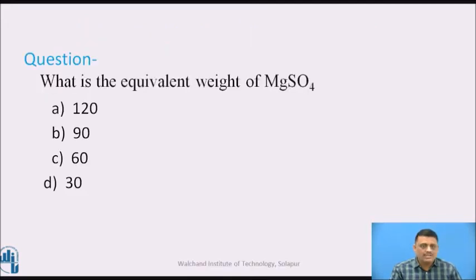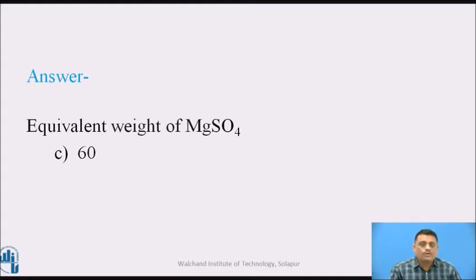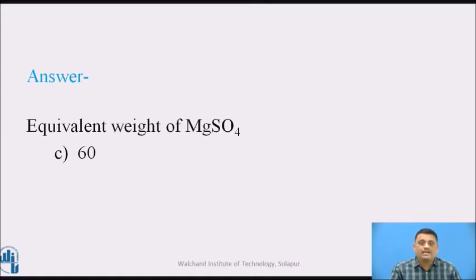What is the equivalent weight of magnesium sulphate? The correct answer is 60. First, we calculate the molecular weight of magnesium sulphate, which is the sum of atomic weights of atoms present in the molecule. Magnesium: 24, Sulphur: 32, and Oxygen: 16 × 4 = 64. So molecular weight = 24 + 32 + 64 = 120. Its valence is 2 because when it dissociates, it forms Mg²⁺ and SO₄²⁻, so the number of electrical charges is 2. Dividing 120 by 2 gives the equivalent weight of 60.